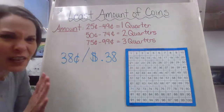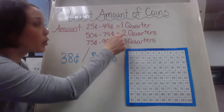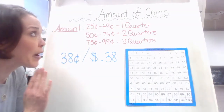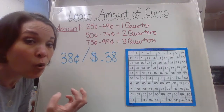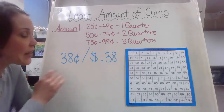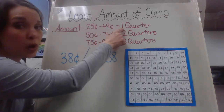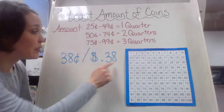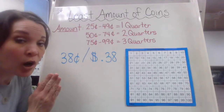So how do I make 38 cents using the least amount of coins? Up here I have a little cheat sheet showing amounts and the number of quarters needed to make that amount. When thinking about the least amount of coins, you want to start with bigger coin values. Looking at 38 cents, I want to use one quarter, because 38 falls between 25 cents and 49 cents — so I'm going to start with one quarter.